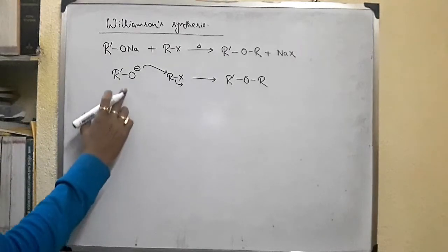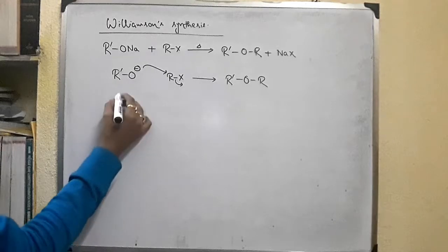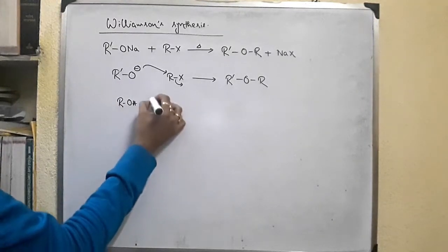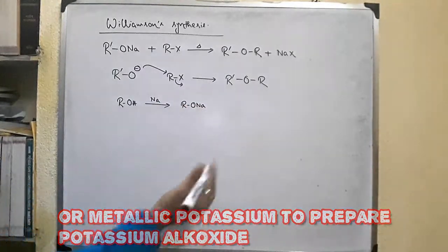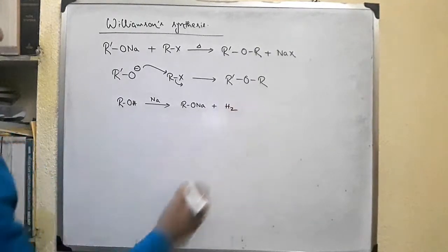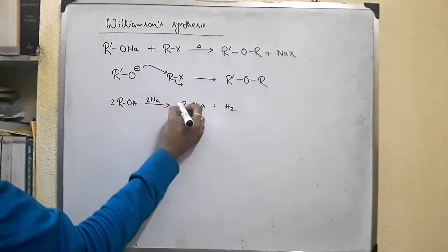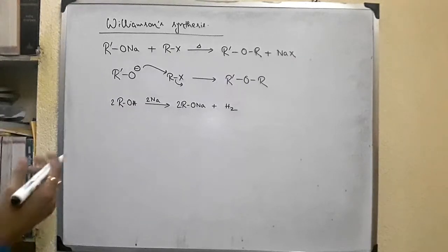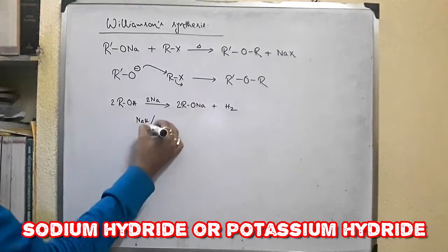In this reaction we use the alkoxide instead of the alcohol. To prepare the alkoxide, when an alcohol is treated with metallic sodium, sodium alkoxide is formed and hydrogen gas is liberated. Another way is the use of sodium hydride or potassium hydride — the effect is the same.